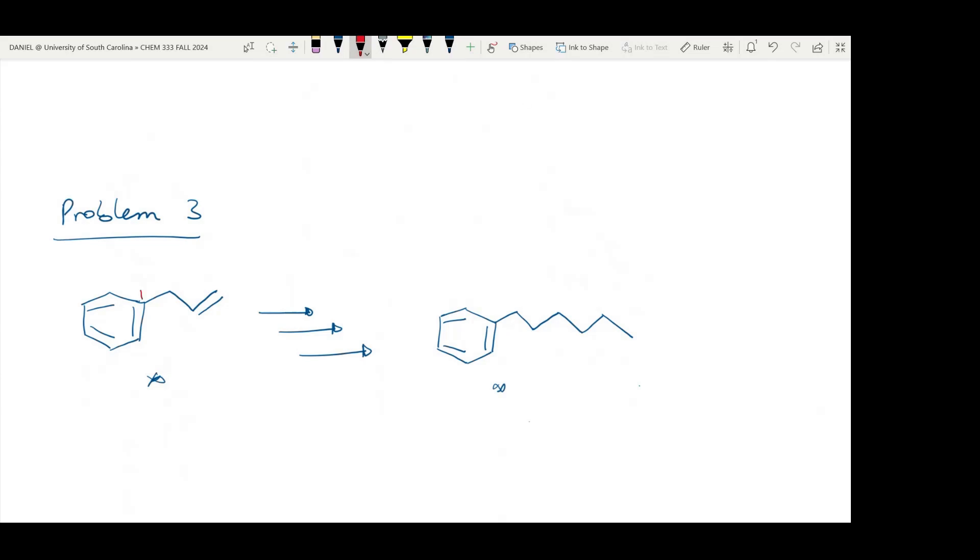For example, if we number this as one, two, three, four, when we come to the product and also number this, we know that this part is the same as the starting material and this will be the extra carbon that is attached.